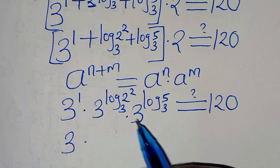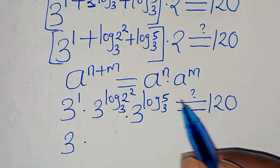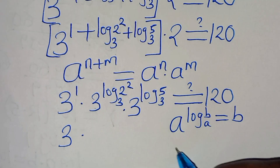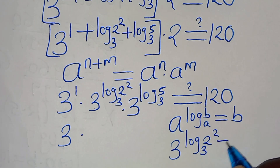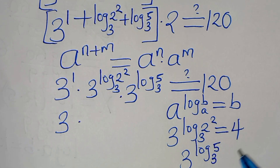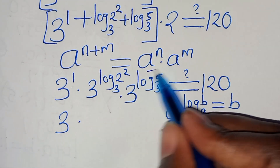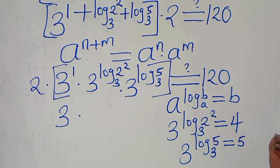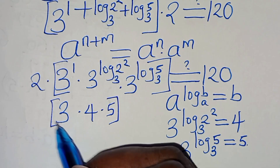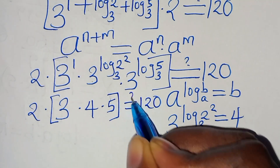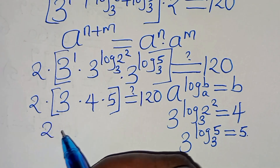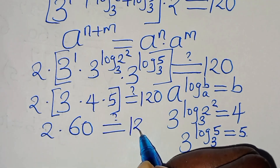Now we have 3 multiplied by 3 to the power of log₃(2²) and 3 to the power of log₃(5). This is in the form a to the power of log_a(b), which equals b. So 3 to the power of log₃(2²) equals 2 squared, which is 4, and 3 to the power of log₃(5) equals 5. Remember we multiply everything by 2. So we have 3 times 4 times 5, everything multiplied by 2, which should give 120. Now 4 times 5 is 20, times 3 is 60, so we have 2 multiplied by 60, which is 120. This is supposed to give us a value of 120.